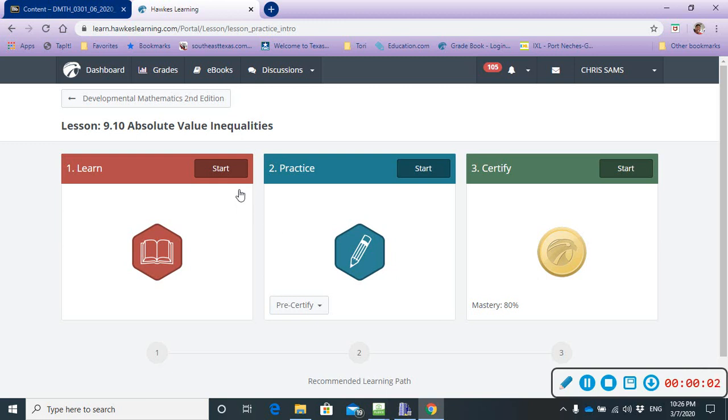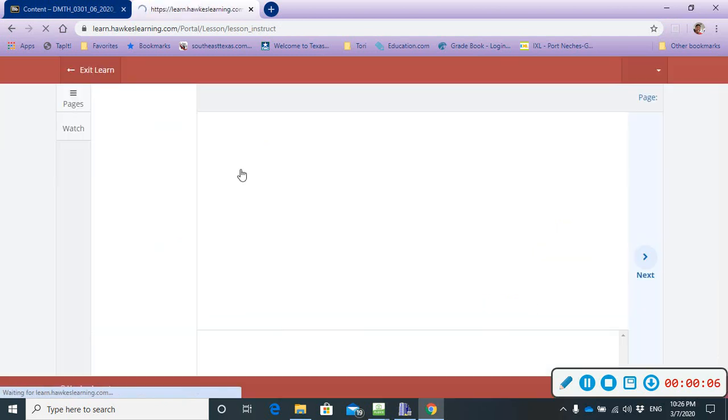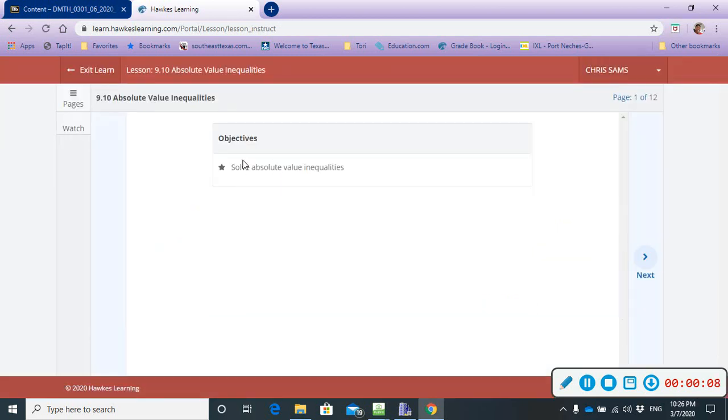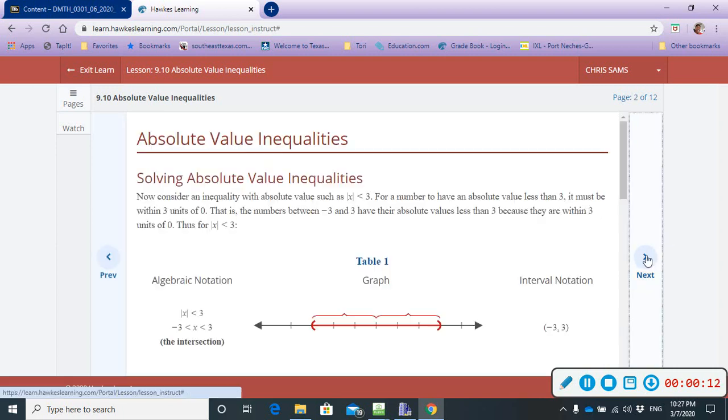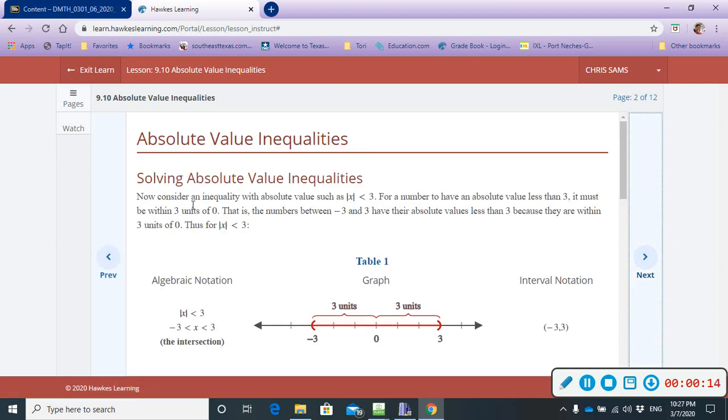Alright, so now we're going to look at Section 9.10, which is Absolute Value Inequalities. There's just one objective to solve, Absolute Value Inequalities. So, good reading here.